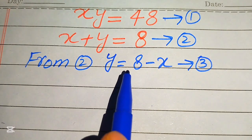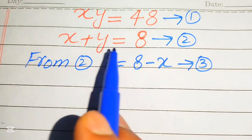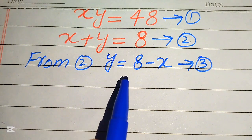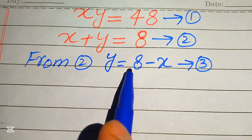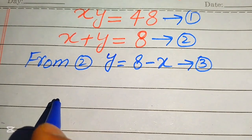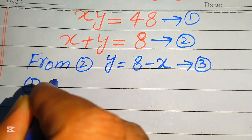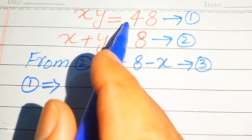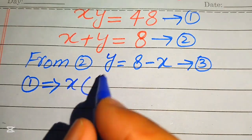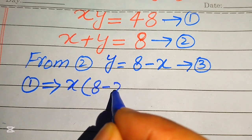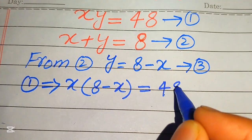Here we need to put this value of y in equation number 1, so we convert this equation into the x variable. After substituting this value of y in equation number 1, equation number 1 implies that we put this value of y here, so we have x times y, and the value of y is 8 minus x, equals 48.